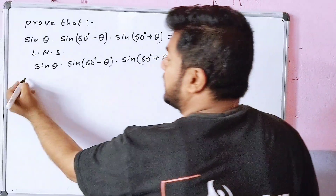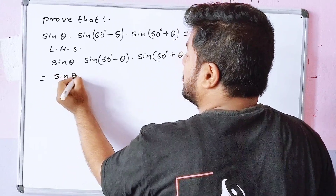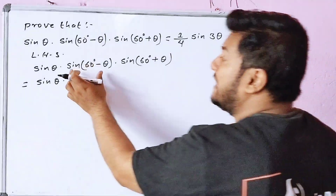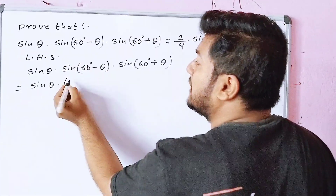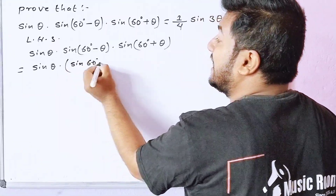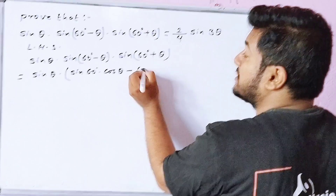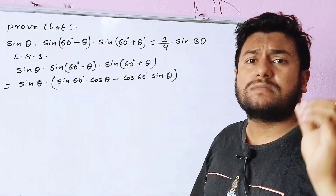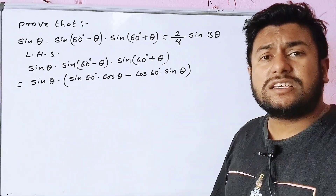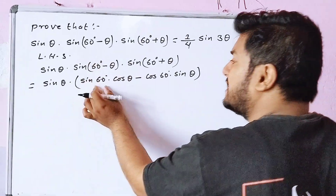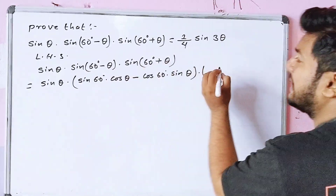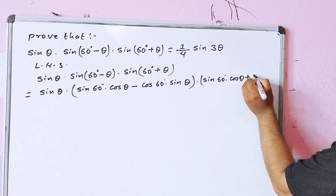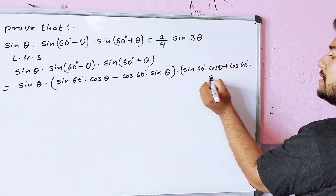Sin theta. Using the sin(a minus b) formula: sin a into cos b minus cos b into sin a. For sin(60 degrees minus theta): sin 60 degrees into cos theta minus cos 60 degrees into sin theta. For sin(60 degrees plus theta): sin 60 degrees into cos theta plus cos 60 degrees into sin theta.